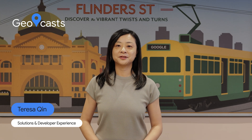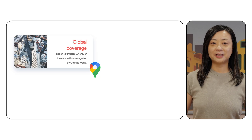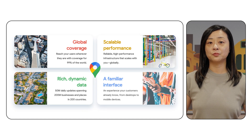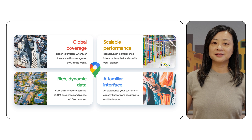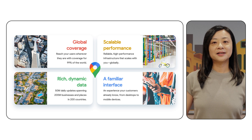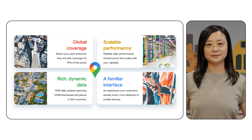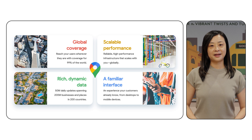For millions of users globally, Google Maps is the go-to source for accurate and up-to-date places information. Google's rich database of over 250 million places worldwide, including user reviews, photos, and ratings, provides an unparalleled level of detail and trust. To provide fresh and accurate data, we make 100 million updates to the maps every day.